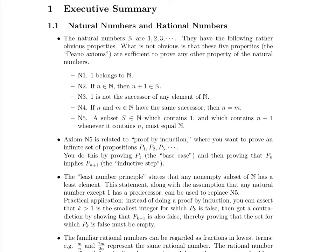There's another way to prove something for all cases, which normally sets you up to do a proof by induction, but what it really involves, instead of doing the base case and then the inductive step, is doing its complement or opposite. This involves using the least number principle. What the least number principle says is that any non-empty subset of the natural numbers has a least element, and we're going to exploit that instead of doing an inductive step in the proof strategy.